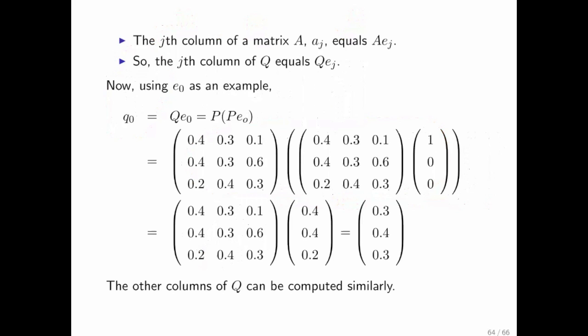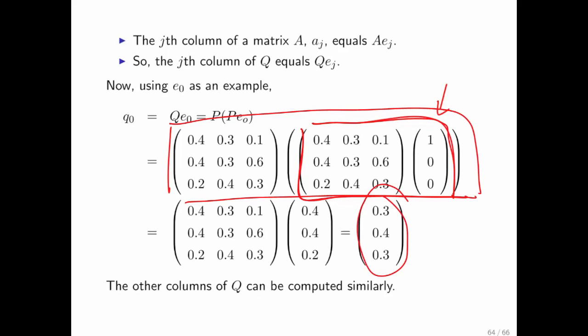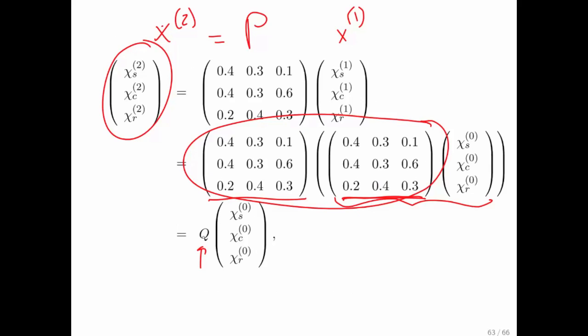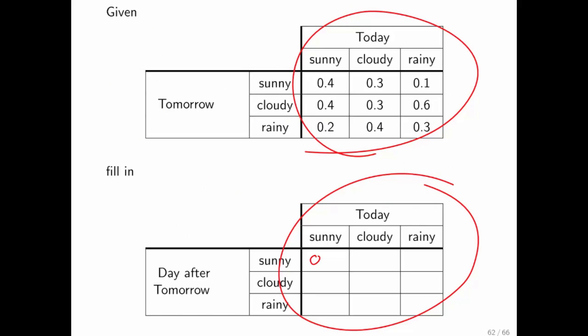How might you compute that? Well, you know how to determine columns of a matrix. You know that that's a matter of plugging in the unit basis vectors and seeing what comes out. So you can plug in the first unit basis vector, do this multiplication, take the result of that and do this multiplication, and out pops the first column of that transition matrix going from today to the day after tomorrow. So we can then take the result of that and plug it in right here. And we can do the same thing to come up with the other columns.